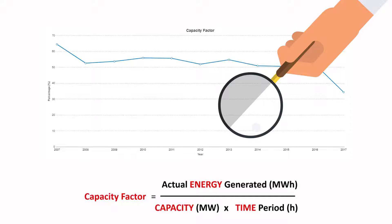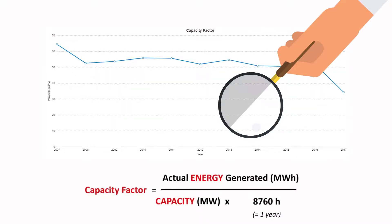Capacity factor is usually expressed as the ratio of the average power generated over a period compared with its maximum output. The common time frame for analysis is either a month, which contains 720 hours, or a year, which contains 8,760 hours.